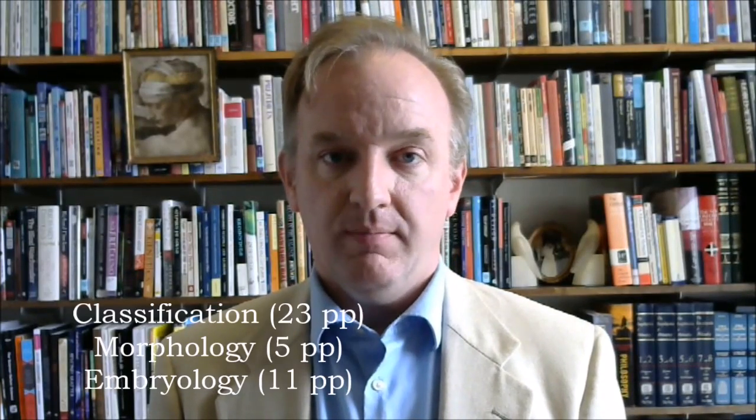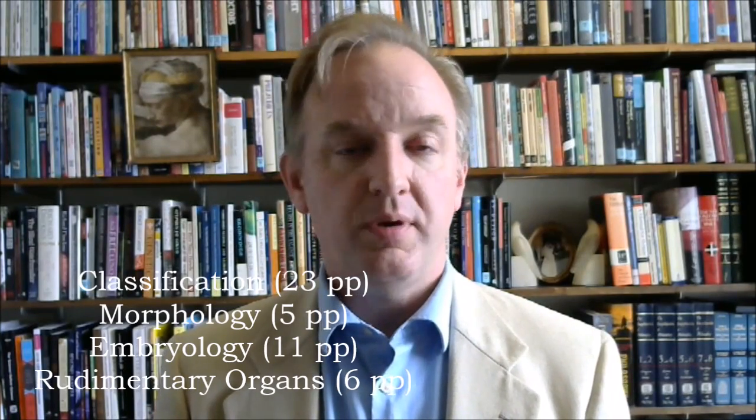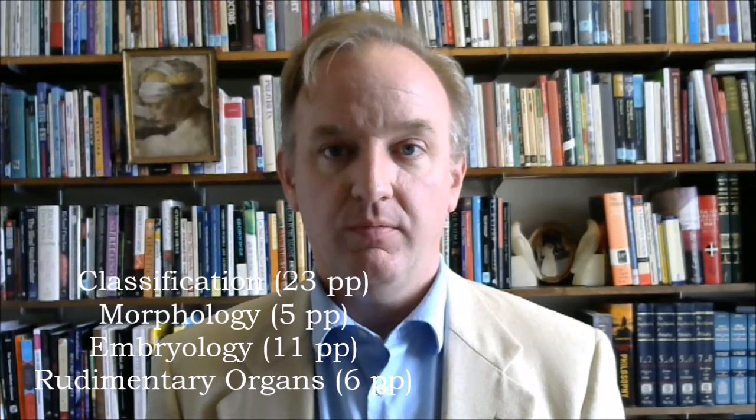In this chapter there are four different types of evidence, families of evidence, that Darwin offers. The first deals with classification, the second with morphology, the third with embryology, and the final one with rudimentary organs. The chapter concludes with a two-page summary which you should be sure not to miss.